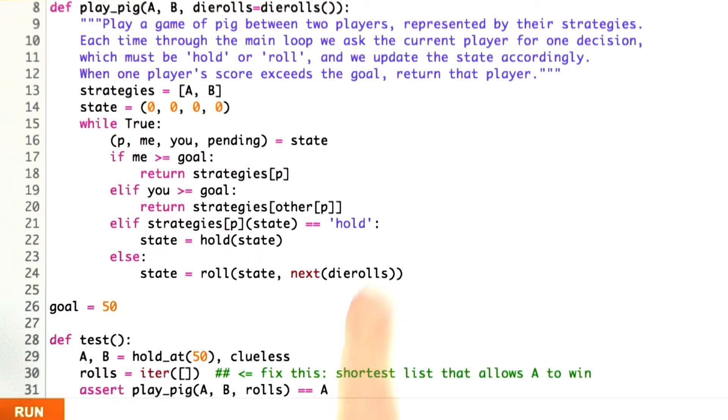So now, with this play pig, with the dependency injection, with the goal being 50, here's a test that I can actually run.